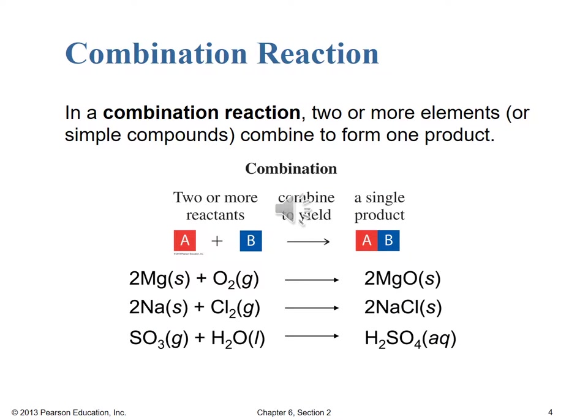The easiest way to identify a combination reaction is having two or more elements or simple compounds — advanced chemistry gets much more complex, but you'll see two or more species, either elements, compounds, or a mixture of elements and compounds on the reactant side — and they combine to form a single product on the product side. We can have non-one coefficients to balance, but we should have only one type of product. That is your giveaway for a combination reaction.